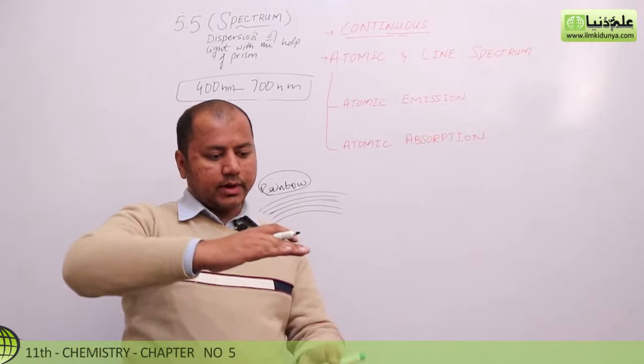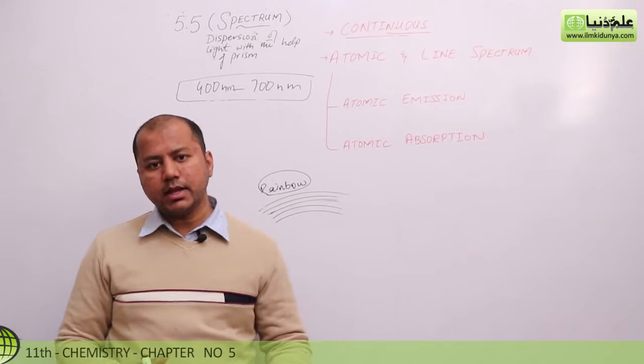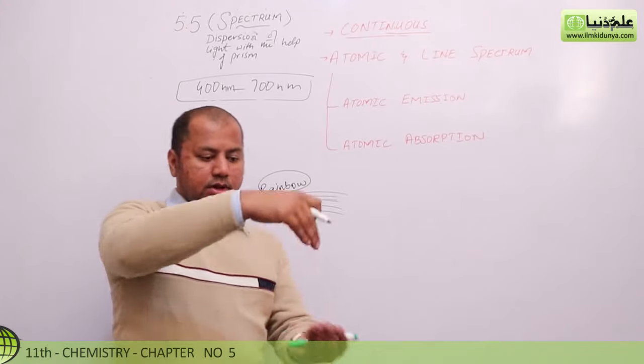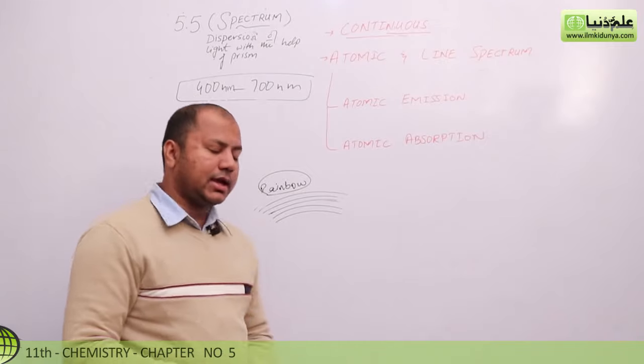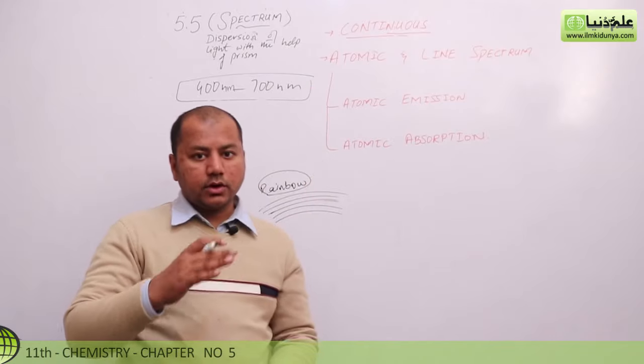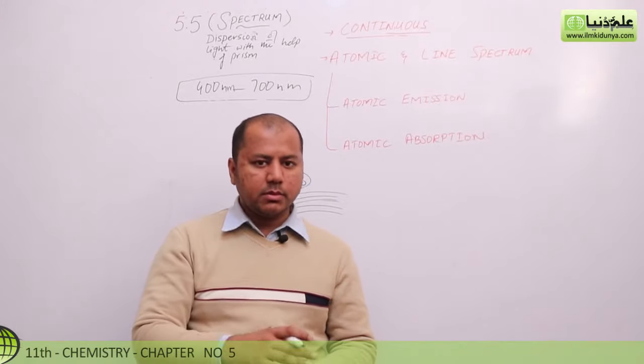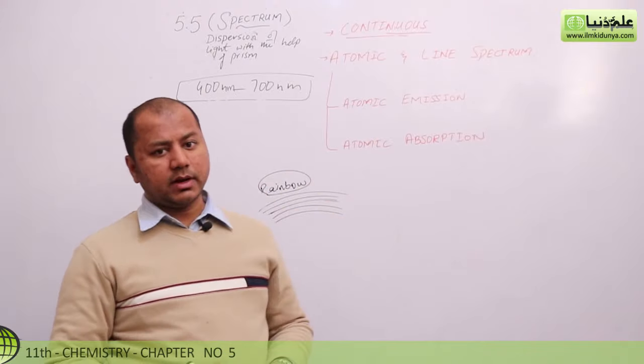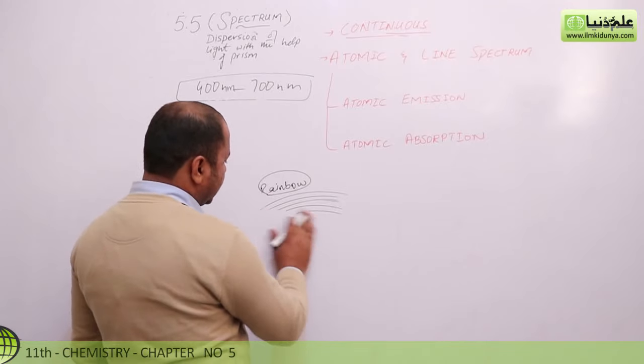But sometimes photons get properly separated. When they get properly separated, they're not in continuous form. They come into atomic or line spectrum. But when their wavelengths are dispersing within each other, then we call that continuous spectrum. When the spectrum, the photons are not intermixed, they are called atomic or line spectrum because they have some lines.